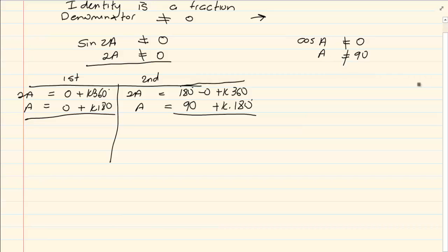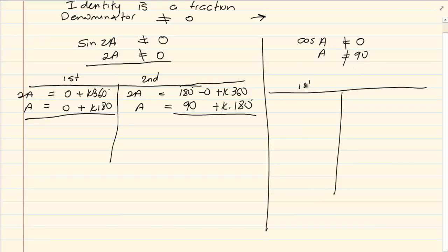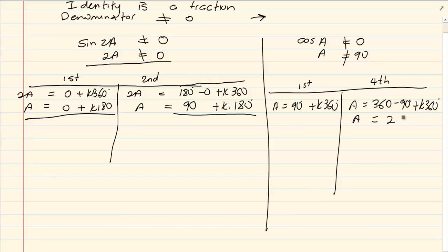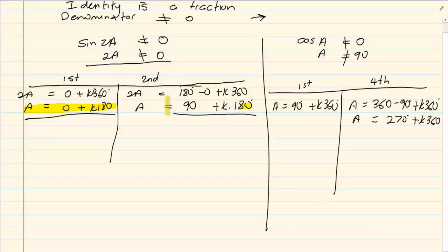Now let us do cos(a). Because we are talking of restrictions, you don't need to put the equal sign. Cos in the first quadrant gives a = 90° + k·360°. But cos is positive in the fourth quadrant, so we also have 360° − 90° + k·360°, which gives a = 270° + k·360°. So our full solution set is: a = 0 + k·180°, a = 90° + k·180°, a = 90° + k·360°, and a = 270° + k·360°. These are the restrictions.